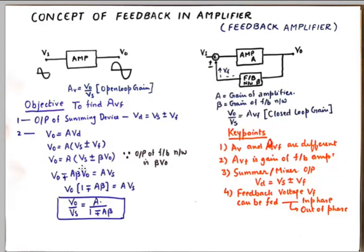In the next step, I know Vf is beta times V0 because Vf is obtained at the output of this feedback network block. So then we take this part to the left hand side. Now when we take this part to the left hand side, this plus minus sign reverses to minus plus.